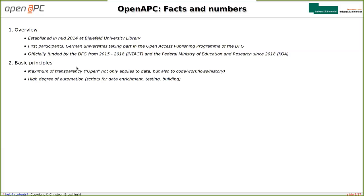We also employ a high degree of automation. We use many scripts and lots of programming code for things like data enrichment, data testing, data integration, and system building. Otherwise this would be hardly feasible, because I'm the only person dealing with all the data processing. If we wouldn't employ this degree of automation, we wouldn't manage the whole data flow. Our third important principle is that we want to keep low entry barriers for new participants — for example, we don't have a formal membership; you don't have to sign any contracts.